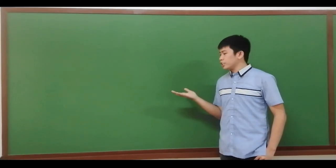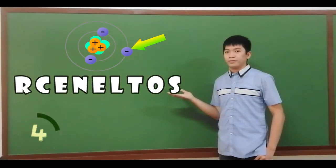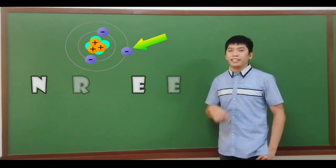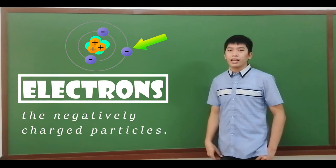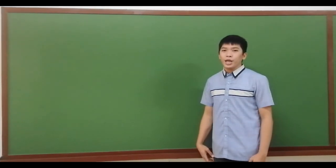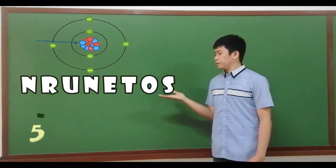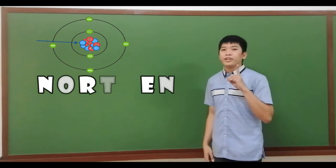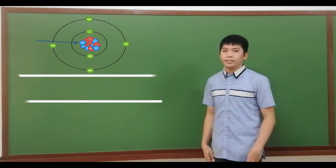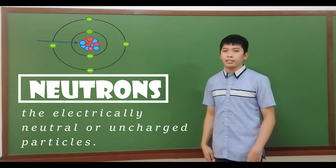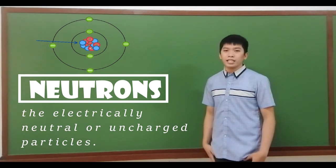How about this one? That's right! It is electron or the negatively charged particles. Lastly, what do you think it is? Very good! It is neutron, which are the electrically neutral or uncharged particles. Neutrons are neither positive nor negative and were discovered by James Chadwick.